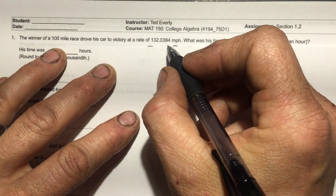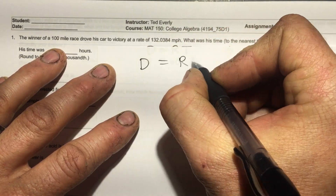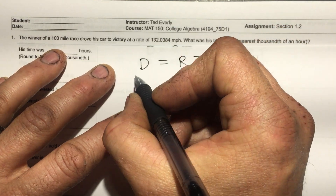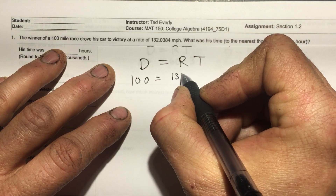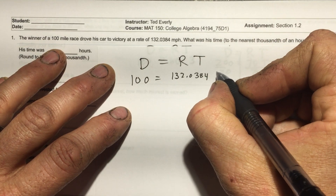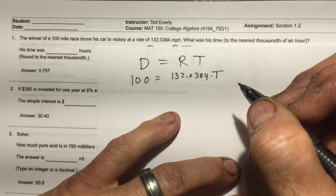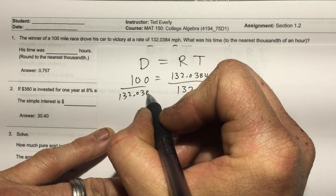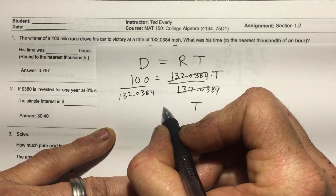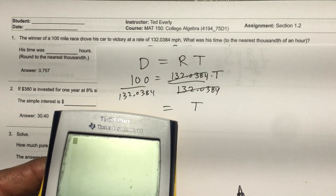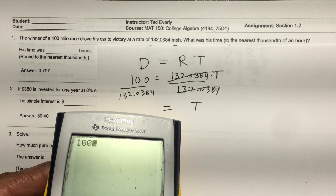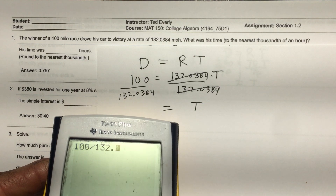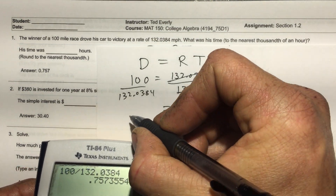For the race problem: distance equals rate times time. The distance is 100 miles and the rate is 132.0384, so I divide both sides by 132.0384. Using a calculator, 100 divided by 132.0384 gives 0.757355...